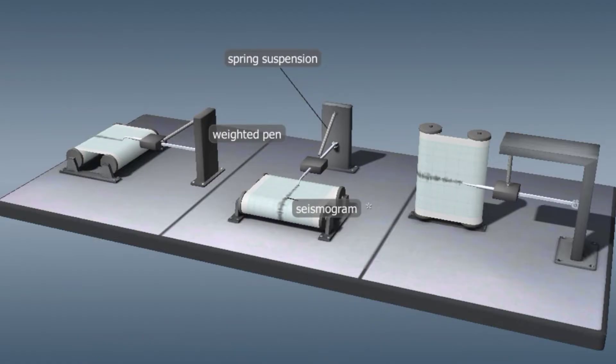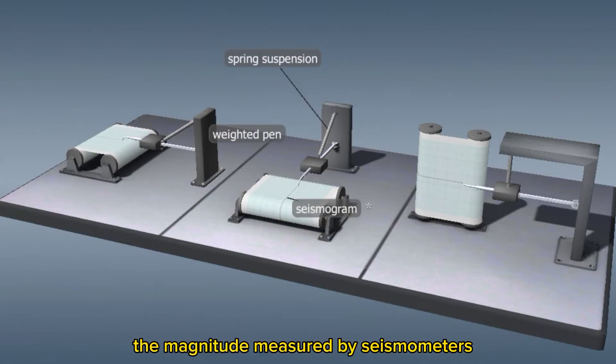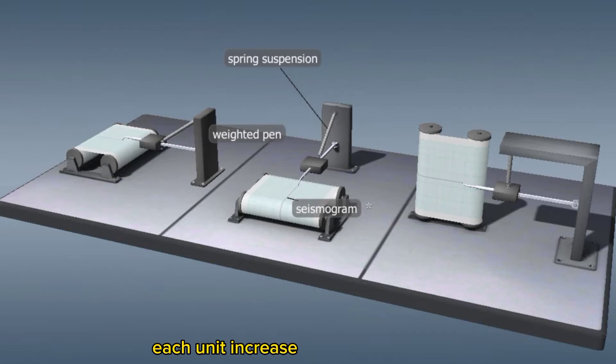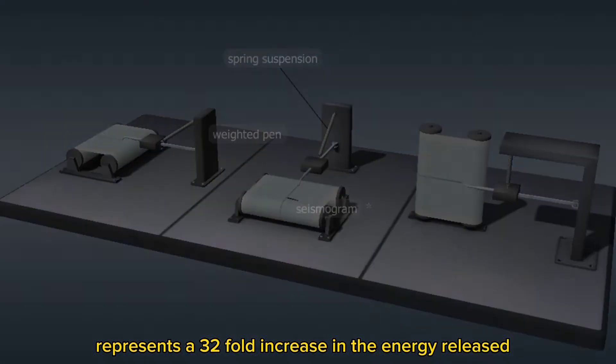It indicates the amount of energy released during an earthquake, i.e., the magnitude measured by seismometers. Each unit increase in the Richter scale represents a 32-fold increase in the energy released.